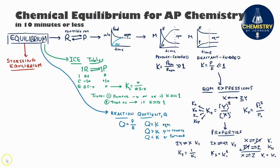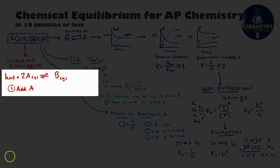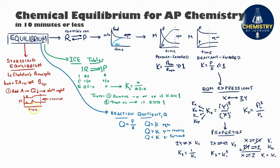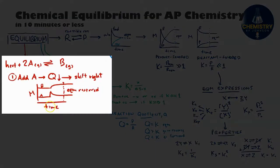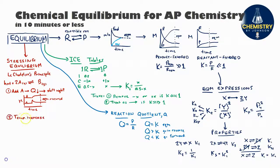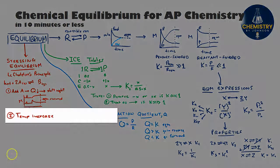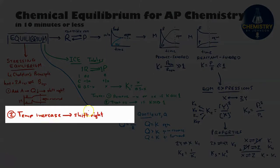You can also take a system at equilibrium and stress or disturb it by changing one or more variables — the system will respond to return to equilibrium. This is described by Le Chatelier's principle. For example, in this endothermic reaction at equilibrium, suddenly adding additional particles of A causes Q to decrease, so the reaction shifts in the forward direction (shifts right). These disturbances are sometimes graphed on a concentration versus time graph, showing where A was suddenly added. Increasing the temperature in an endothermic reaction also causes a shift to the right, and uniquely, temperature changes cause the value of K itself to change — here, K increases as more products are made.